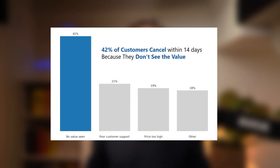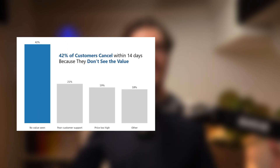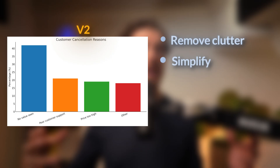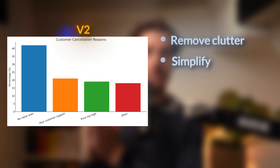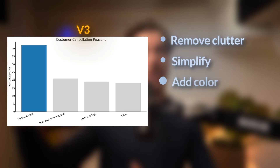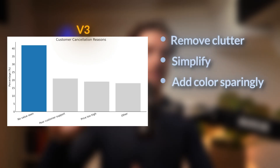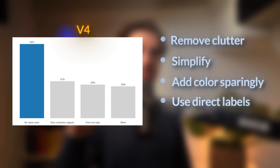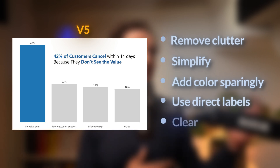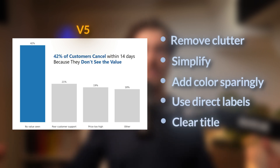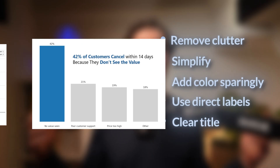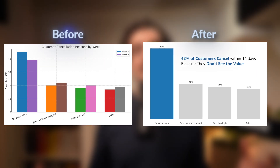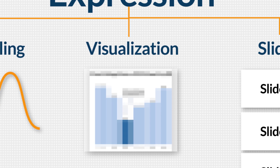Better, right? Here's what we changed. We removed clutter — the grid lines. We simplified by combining two weeks into an average. We added color sparingly to highlight the key message, and we used direct labels showing the percentage right away. There's a clear title communicating the key message. Let's have a look at this side by side — do you see the difference? It looks so much better.